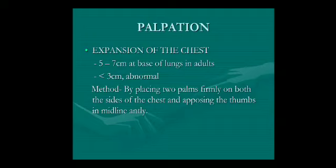In palpation, first assess the expansion of the chest. Place two palms firmly on both sides of the chest with thumbs opposing in the midline anteriorly, then ask the subject to take a deep breath and observe the movement of the thumbs away from the midline. At the base of the lungs, the extent of expansion should be more than five centimeters; at the apex it will be less.